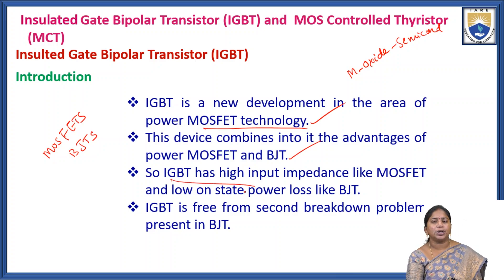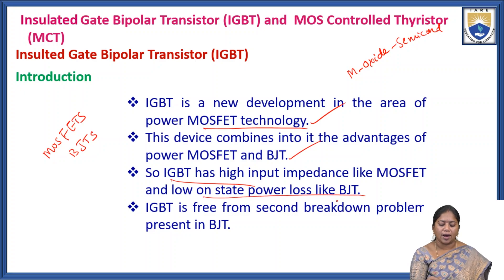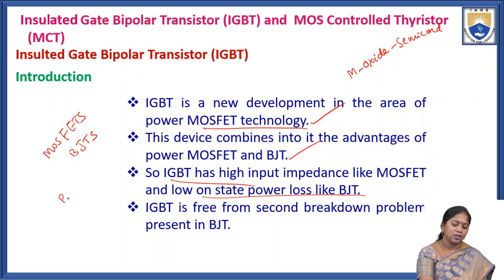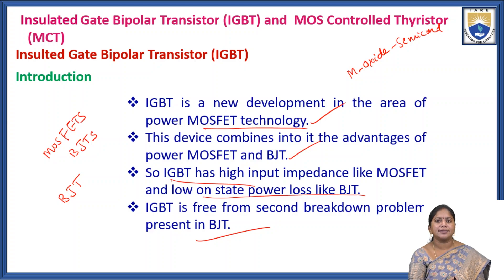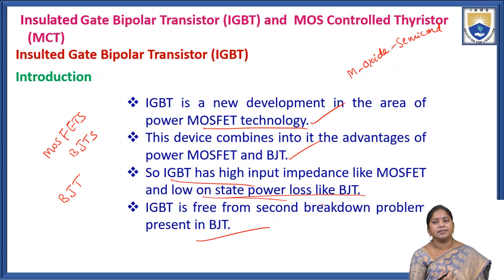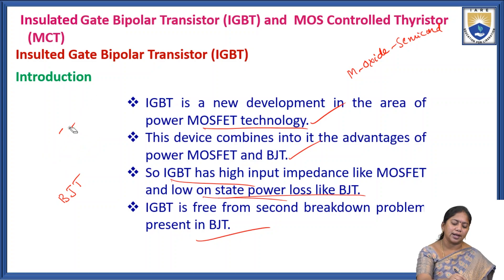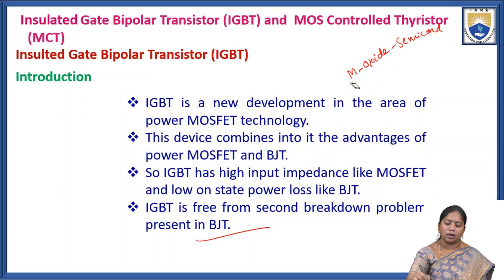IGBT has high input impedance like a MOSFET and low on-state power loss like a BJT, Bipolar Junction Transistor. IGBT is also free from the second breakdown problem present in the BJT, overcoming that key limitation of Bipolar Junction Transistors.